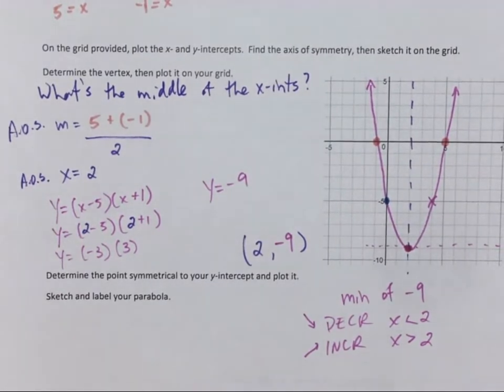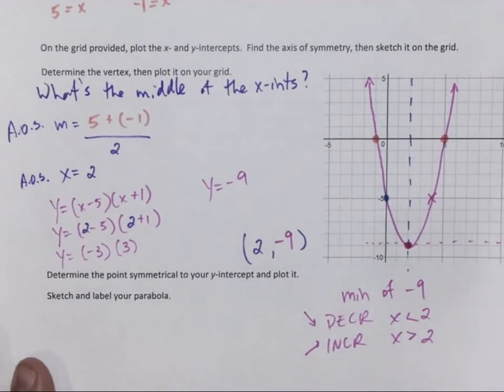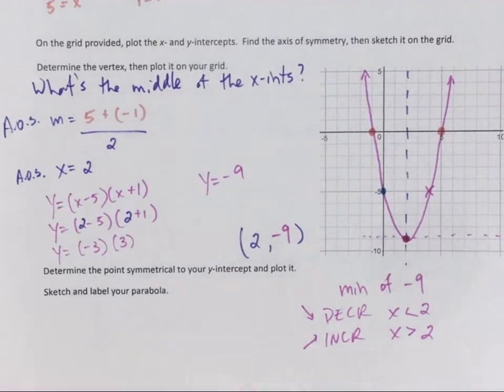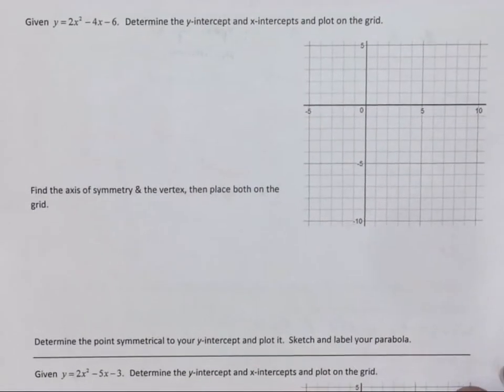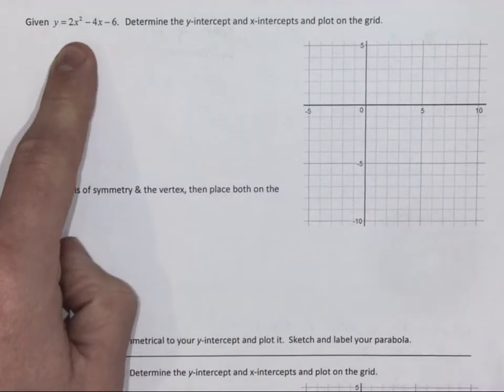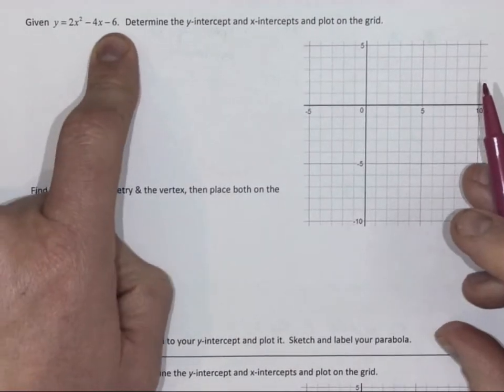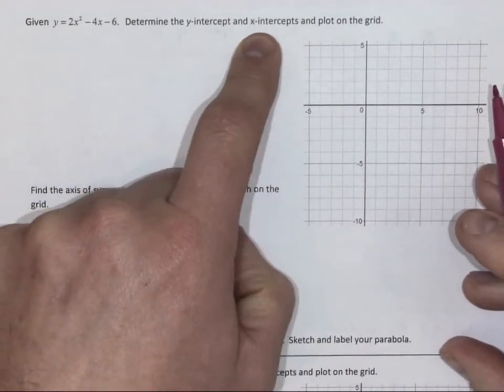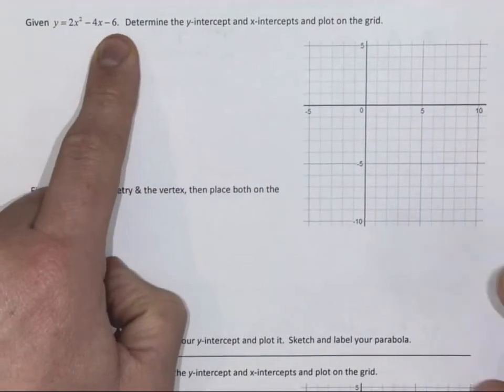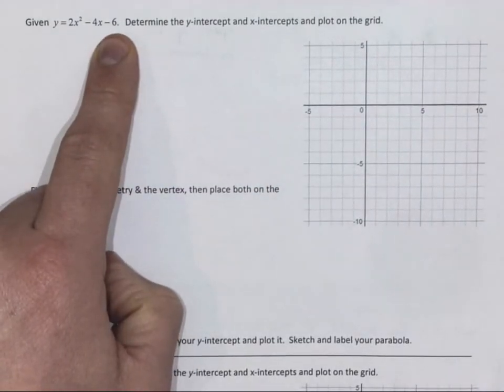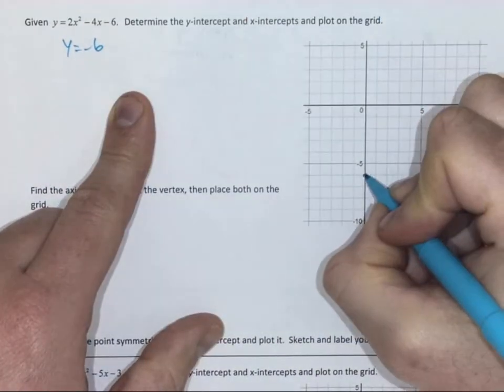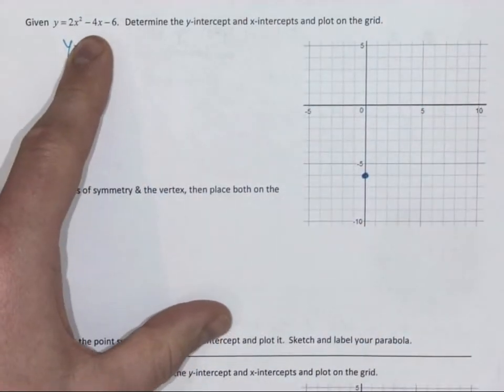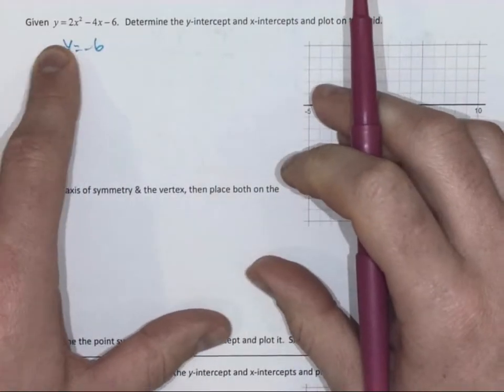Let's do one more example together. And then you have a turn. Given 2x-squared minus 4x minus 6, determine the y-intercept and x-intercepts and plot them on the grid. Got a y-intercept of negative 6. I need to factor that to find my x-intercept.